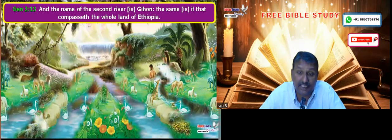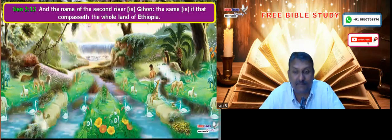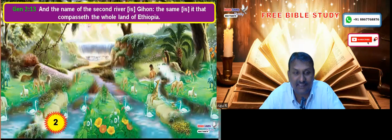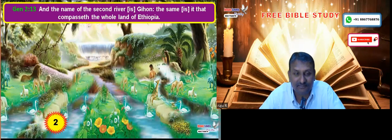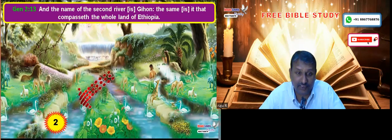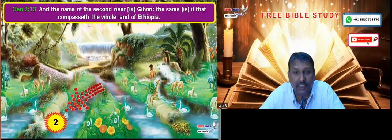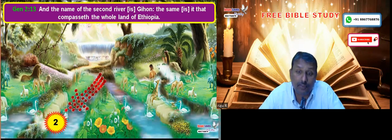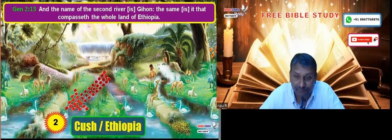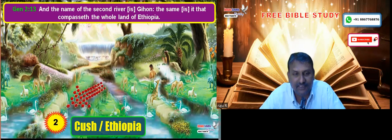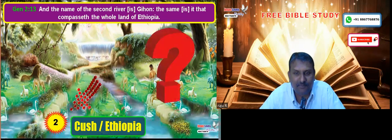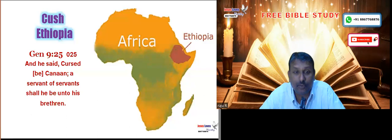Now, the second river — what is the name of the second river? Gihon. Gihon in Genesis 2:13 goes to the land of Ethiopia. What is Ethiopia? Ethiopia is in Africa. Have we ever studied about Africa in our classes? Yes — we have studied about Africans in our beginning classes.